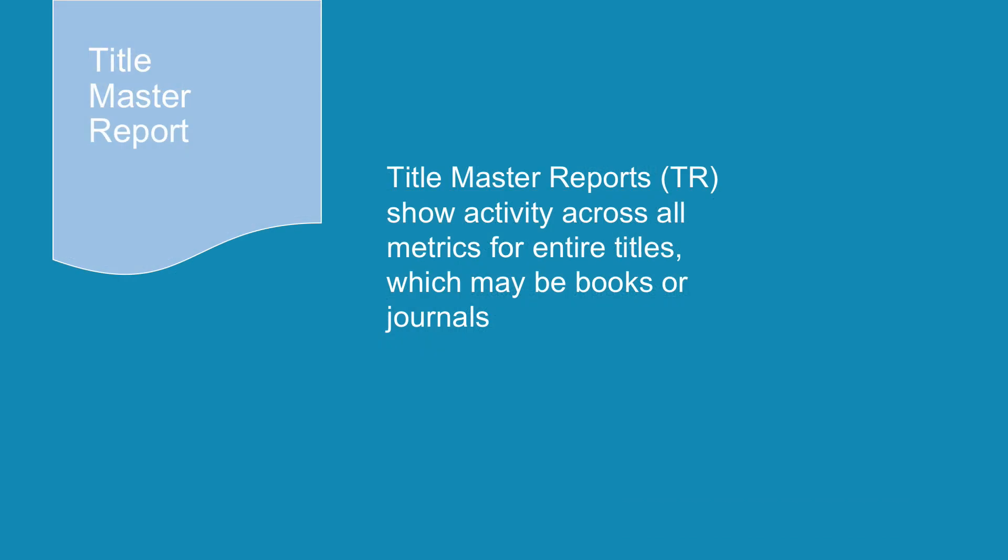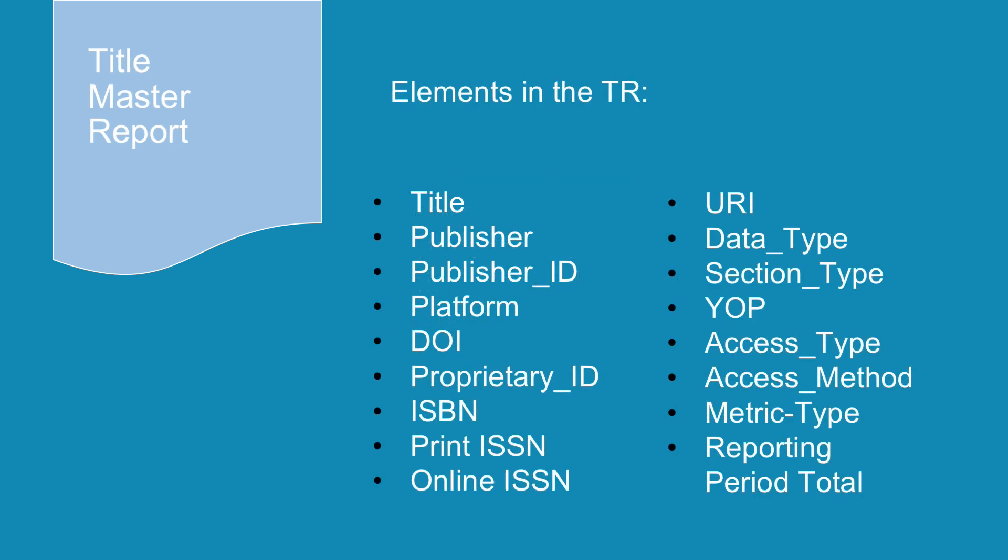Title Master Reports, TRs, show activity across all metrics for entire titles, which may be books or journals. The elements in a TR are: title, publisher, publisher ID, platform, DOI, proprietary ID, ISBN, print or online ISSN, URI, data type, section type, year of publication, access type, access method, metric type, and reporting period total. Note that URI indicates a uniform resource identifier — a string of characters used to identify a resource, similar to an ISSN or a DOI.